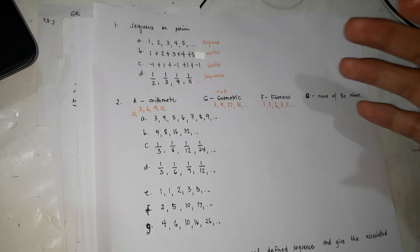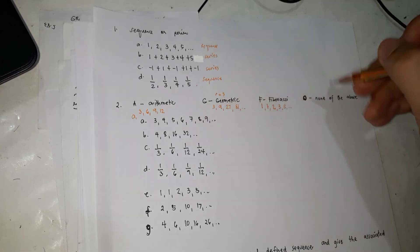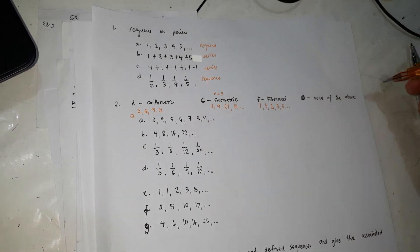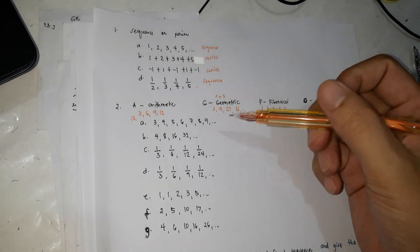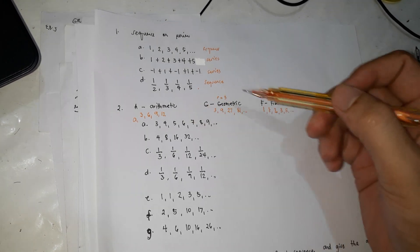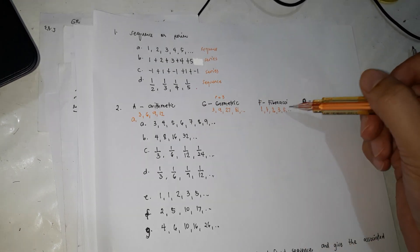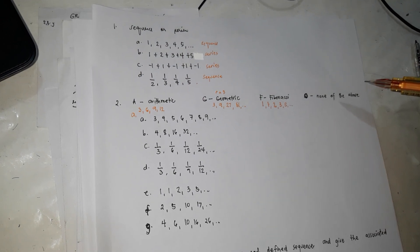Next, if it is not among the three types, then it is none of the above. So we're going to identify these sequences as arithmetic, geometric, Fibonacci, or none of the above.